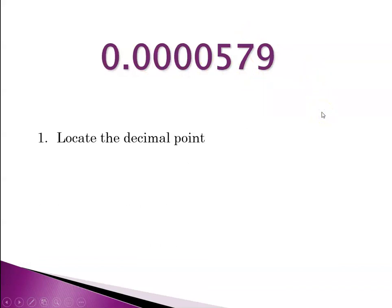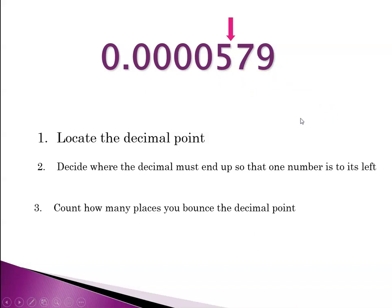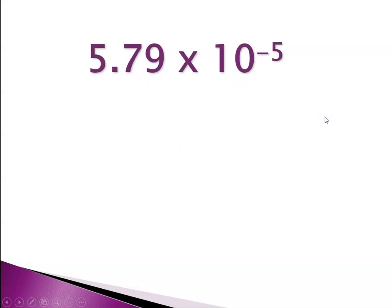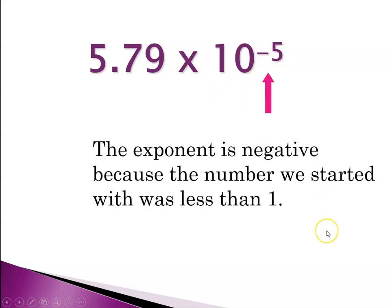So here's another one. Locate the decimal point. It's there. And then decide where it must end up so that there's only one digit to its left, so between the five and the seven. And now count how many places you bounce the decimal point to get it there. So it looks like we have to bounce it five places. And so then we rewrite this in the m times ten to the n format. And so that would give us 5.79 times ten to the minus five. Now the exponent is a negative number because the number we started with was less than one.